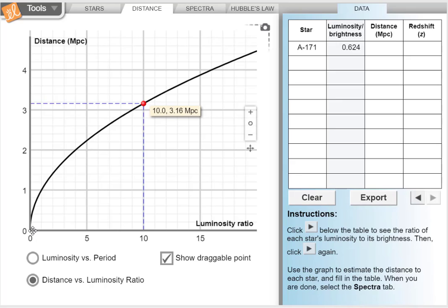And you'll see that it's not a straight line. But as the luminosity ratio increases, the distance of the star increases as well. So the more that's changed from its initial brightness, the further away that star is.